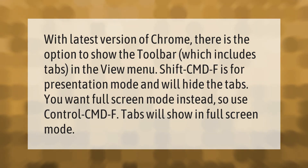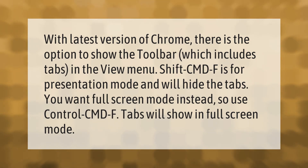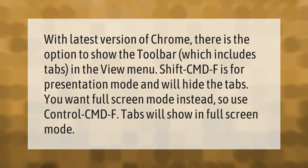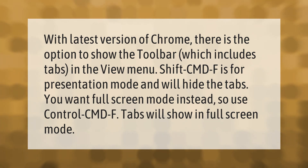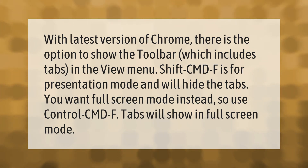With the latest version of Chrome, there is the option to show the toolbar, which includes tabs, in the View menu. Shift+Cmd+F is for presentation mode and will hide the tabs. Use Ctrl+Cmd+F for full screen mode instead — tabs will show in full screen mode.